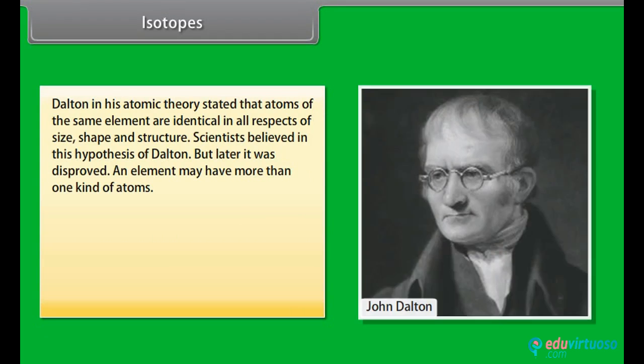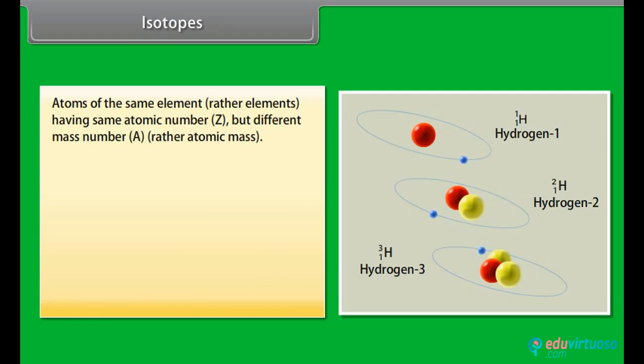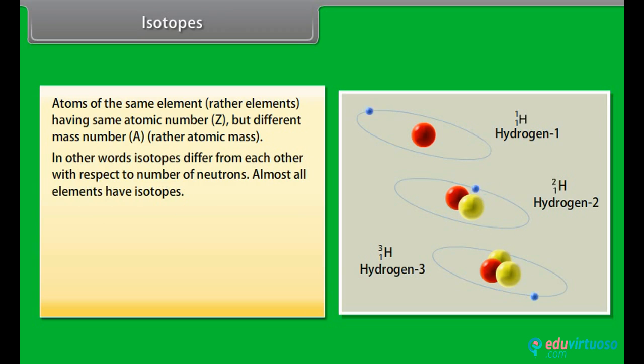Isotopes. Dalton in his atomic theory stated that atoms of the same element are identical in all respects of size, shape and structure. Scientists believed in this hypothesis of Dalton but later it was disproved. An element may have more than one kind of atoms. They may have same number of electrons and protons, that is, same atomic number, but they may differ from each other with respect to number of neutrons, that is, they may have different mass number or atomic mass. Such atoms of an element are known as isotopes. Atoms of the same element, rather elements having same atomic number Z but different mass number A rather atomic mass. In other words, isotopes differ from each other with respect to number of neutrons. Almost all elements have isotopes.